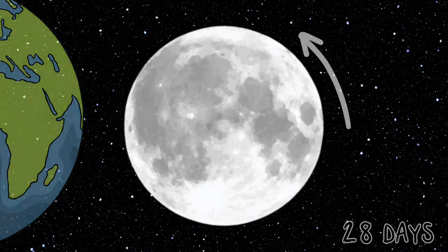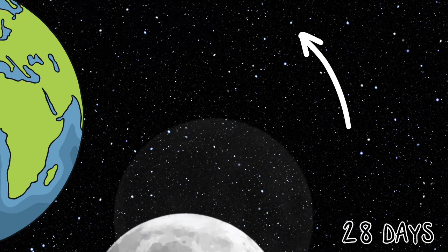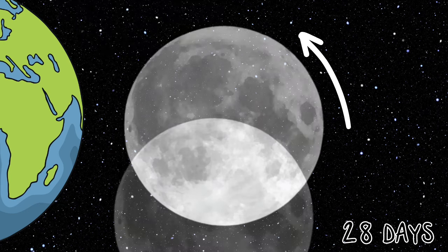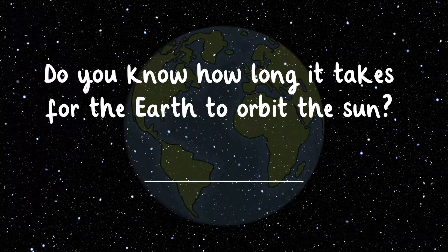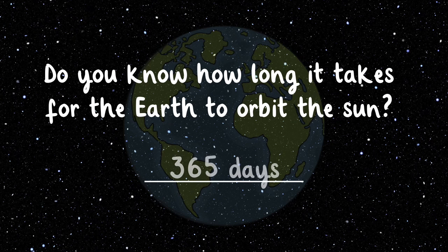The Moon orbits counterclockwise around Earth. It takes almost 28 days for the Moon to make this trip. Do you know how long it takes for the Earth to orbit the Sun? 365 days, or one year.